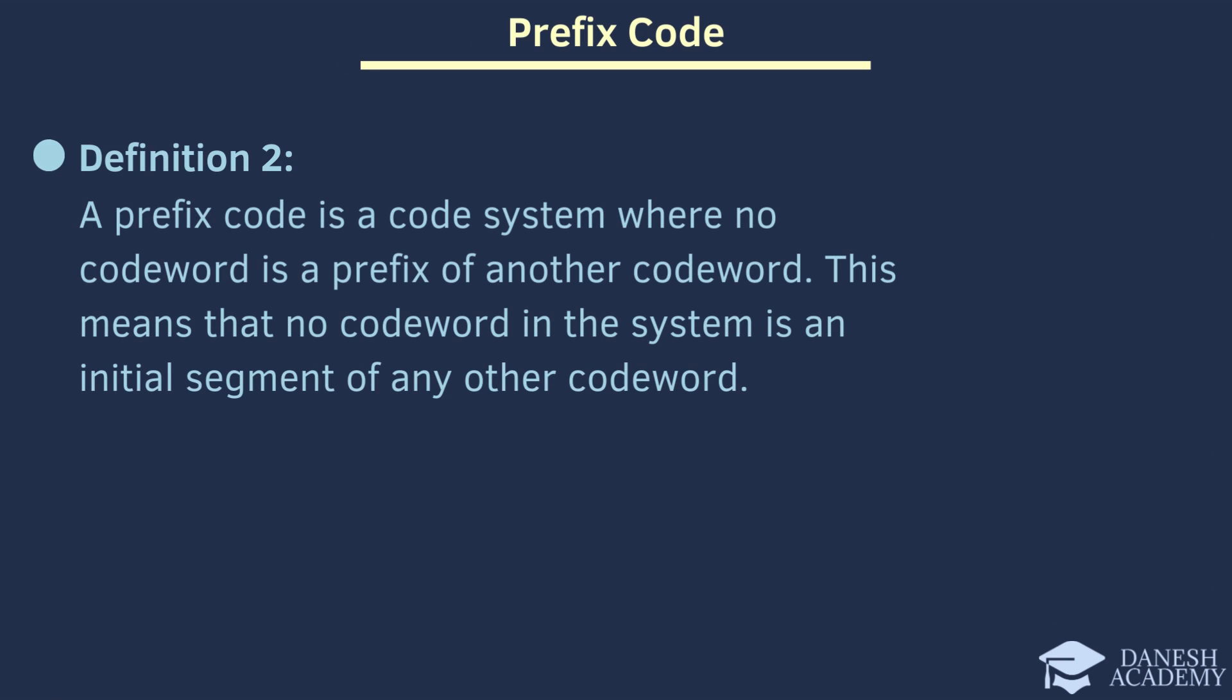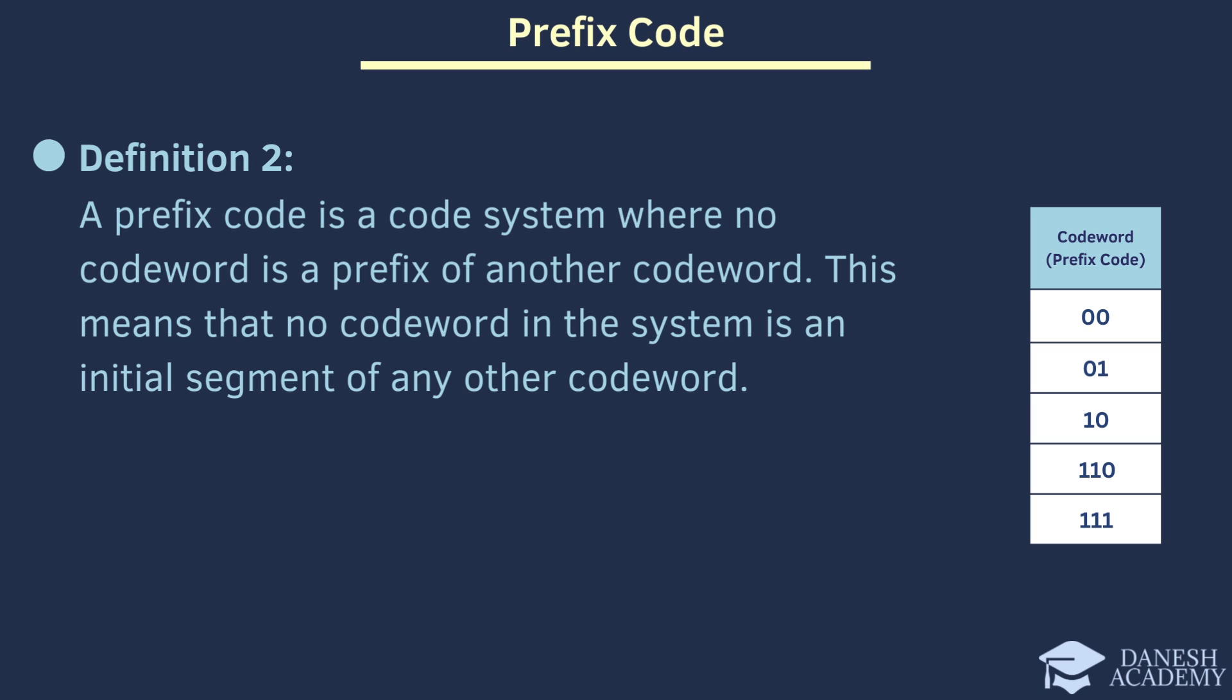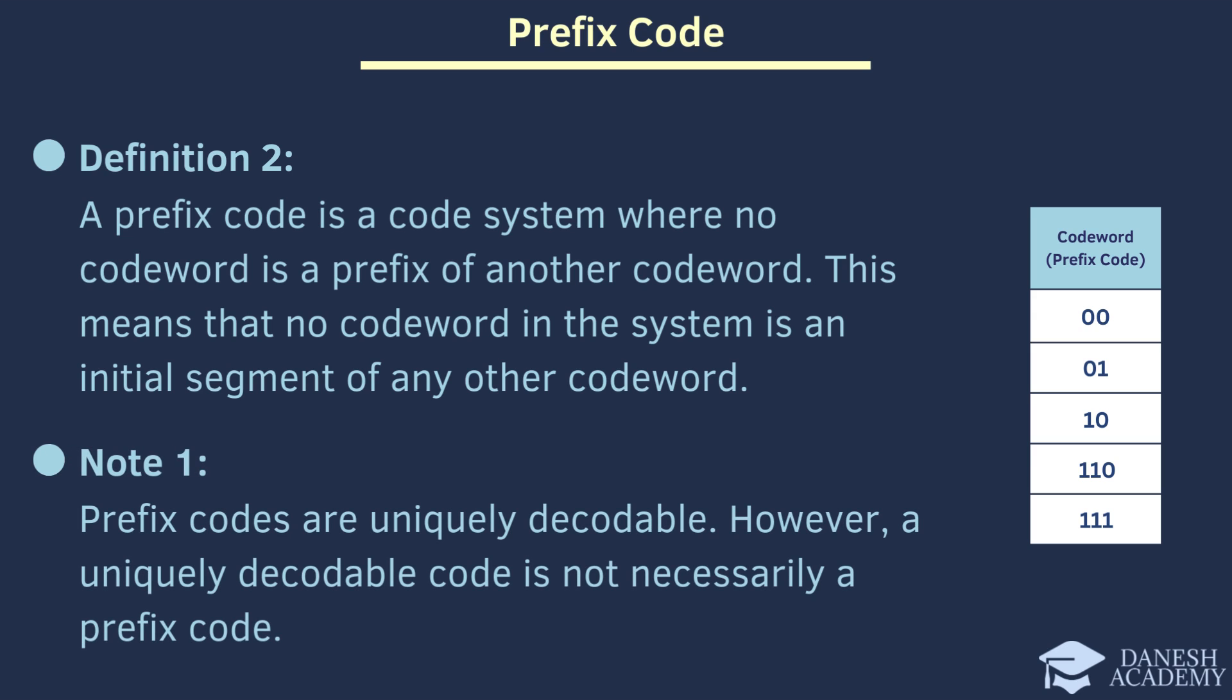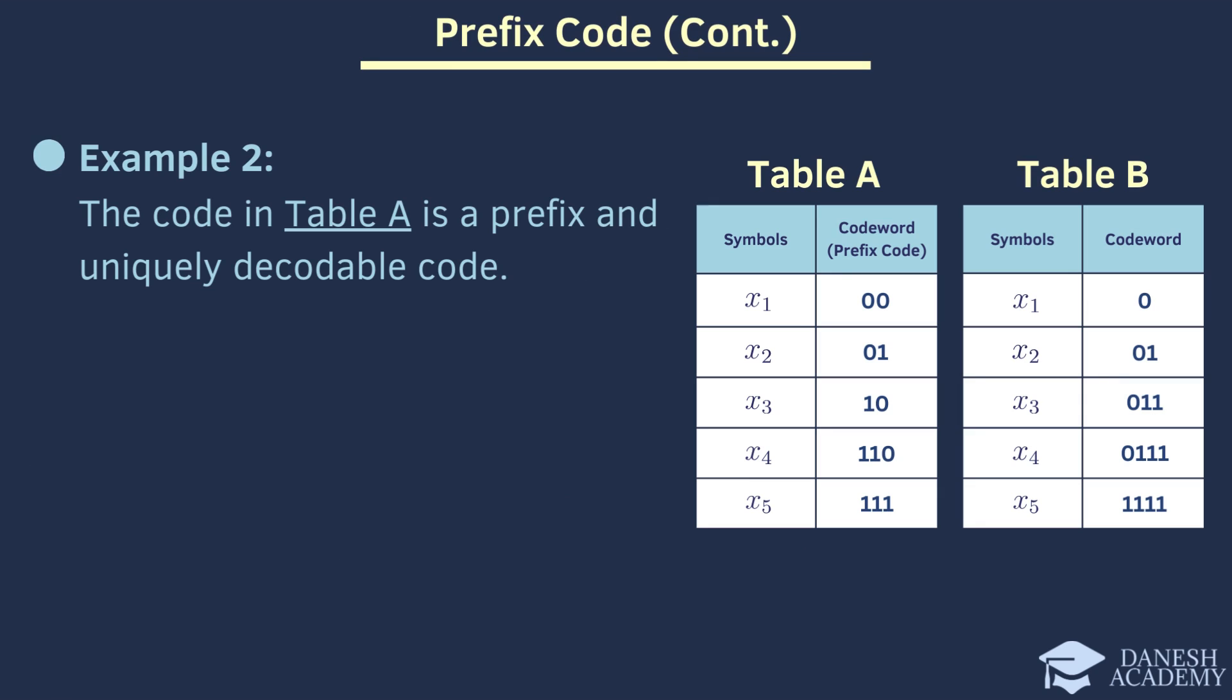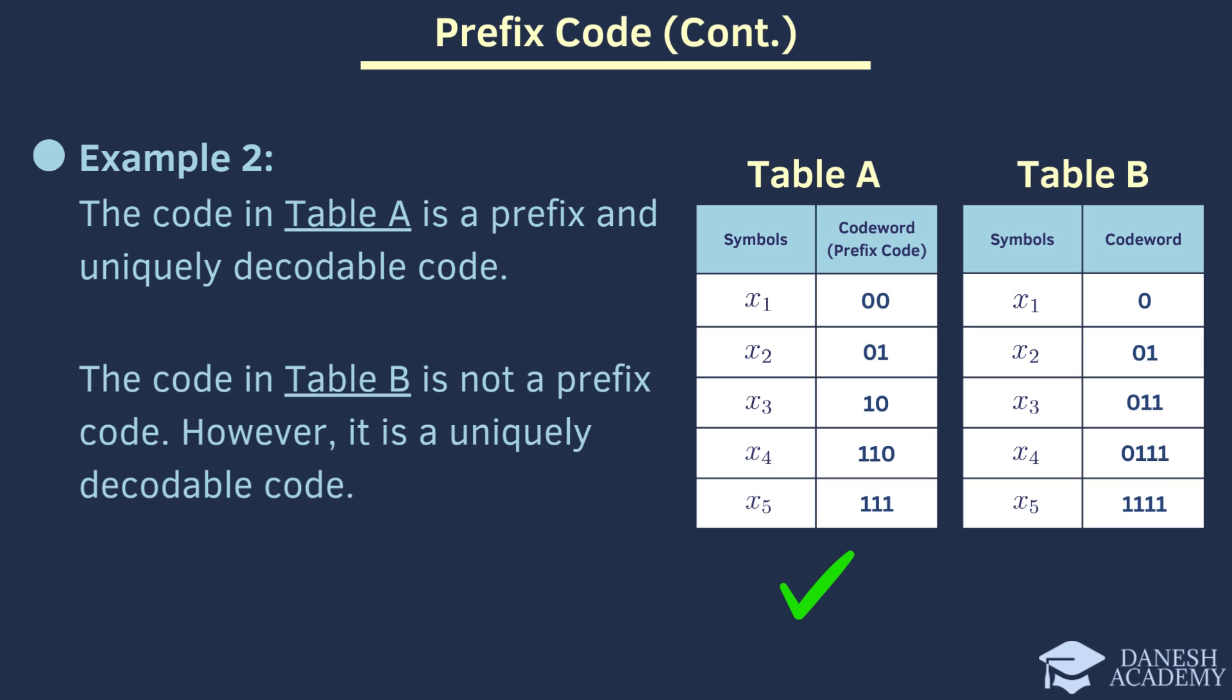Here we have a table displaying a prefix code. A prefix code is a method where no code starts like another. For example, in this table, 00 is not a prefix for any other code, and the same goes for 01. This guarantees that each message is decoded uniquely. However, it's important to note that while all prefix codes ensure unique decoding, not every uniquely decoded code is a prefix. Here we have an example. Take a look at these two tables. In table A, each code is unique and doesn't start like any other. This makes it a prefix and uniquely decodable code. In table B, it's a bit different. While it's still uniquely decodable, some codes start like others, so it's not a prefix code. A uniquely decodable code means that every message we encode has only one way to be understood, with no confusion.